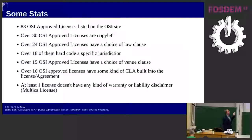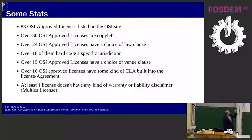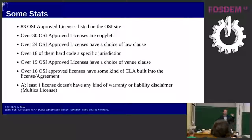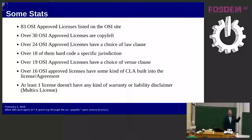Looking at some stats: there are over 30 OSI-approved copyleft licenses — probably about 50-50 copyleft to permissive — so the idea that copyleft isn't popular isn't true; most businesses writing open source licenses make them copyleft. Over 24 of these licenses have a choice of law clause, determining which jurisdiction's law applies. So if you use one of these licenses, you might find yourself subject to the laws of the Netherlands or Japan — even if you've never been there.